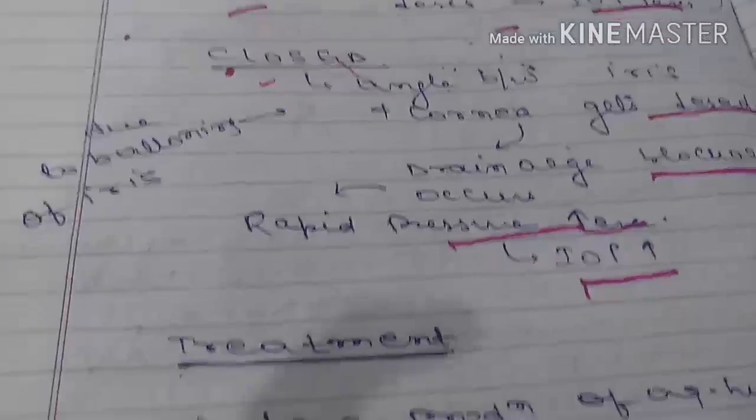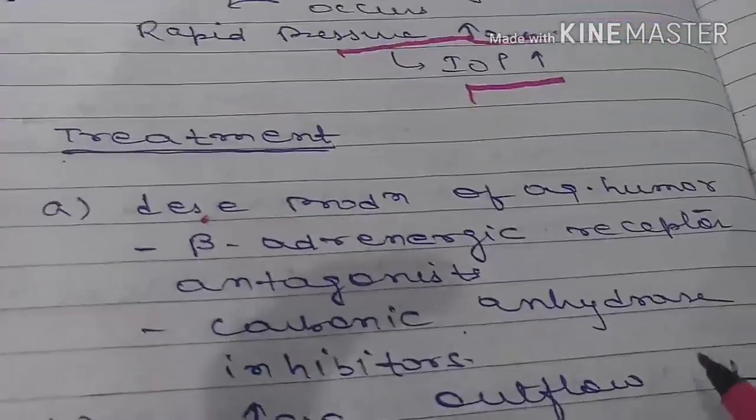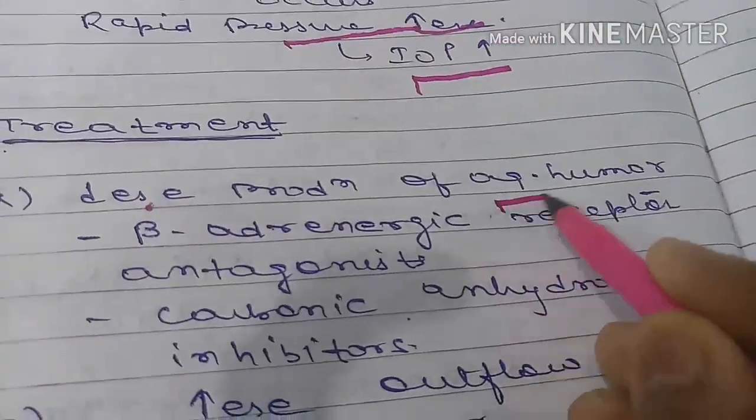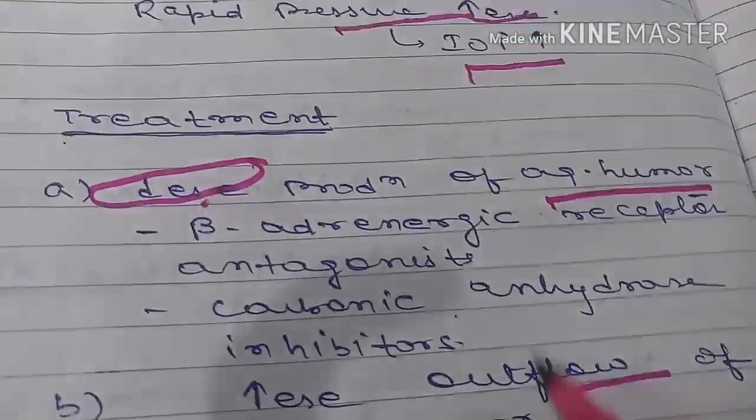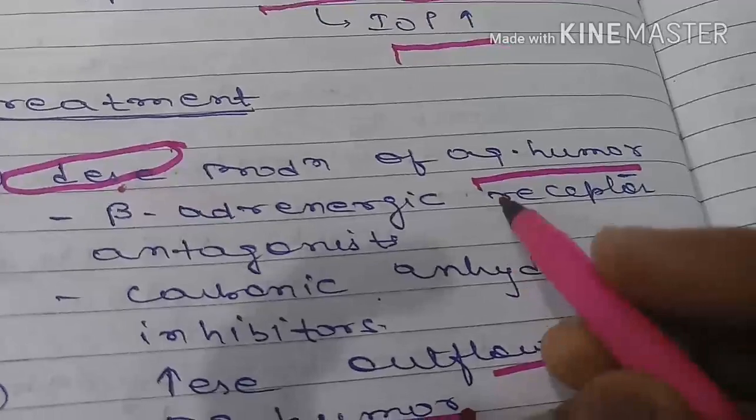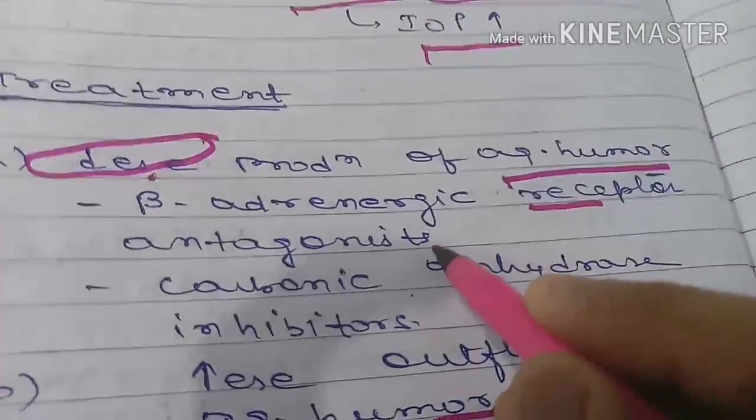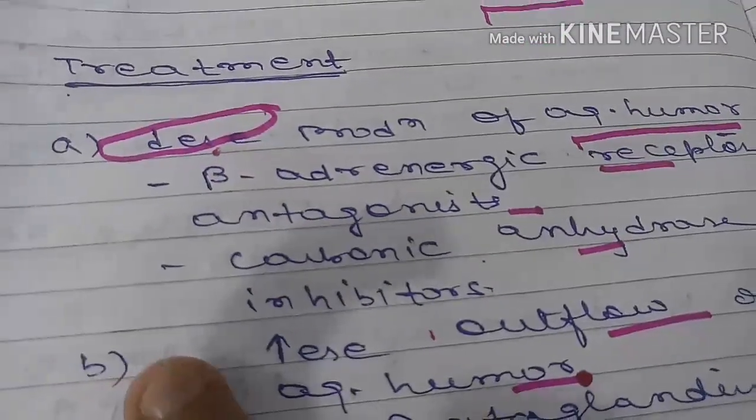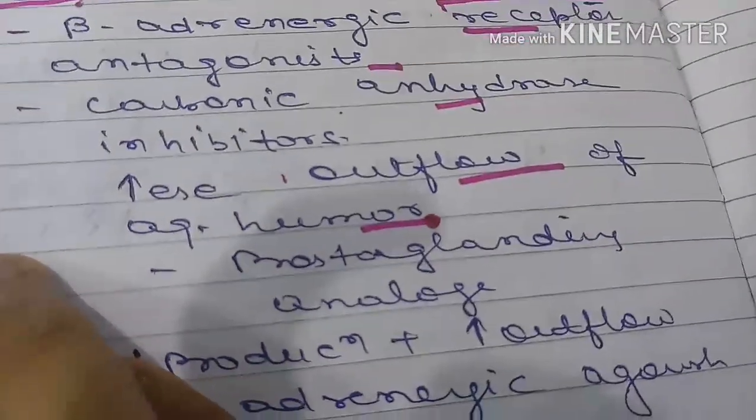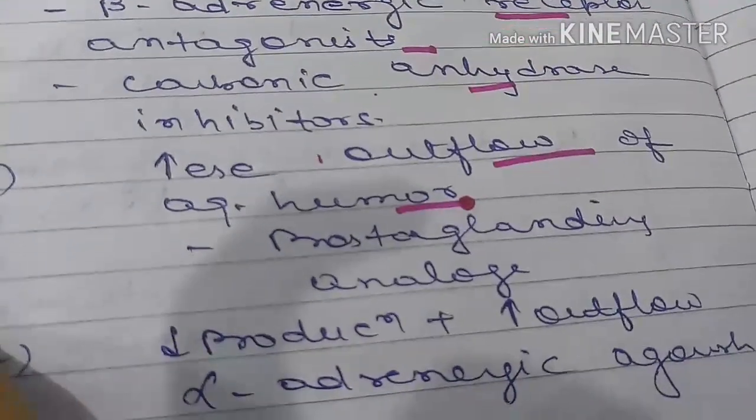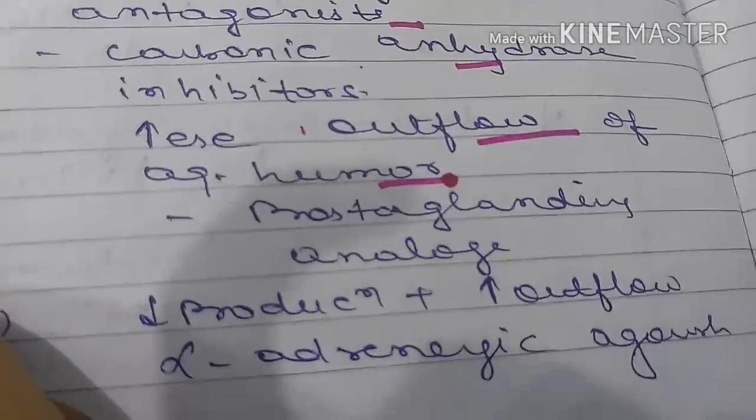For treatment, we can reduce aqueous humor production using beta adrenergic receptor antagonists and carbonic anhydrase inhibitors, or we can increase outflow using prostaglandin analogs. Alpha adrenergic agonists can also be used.